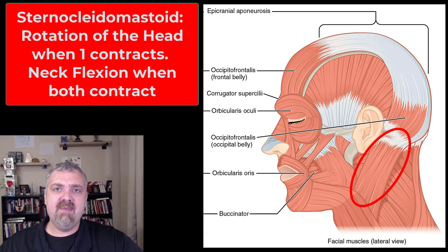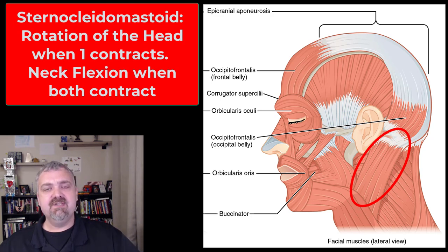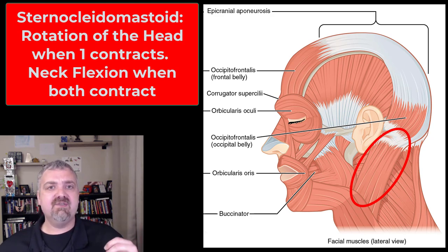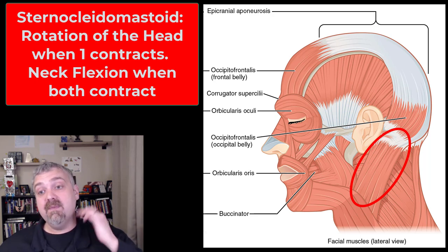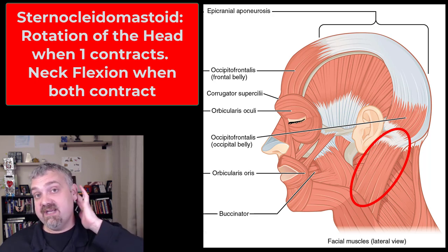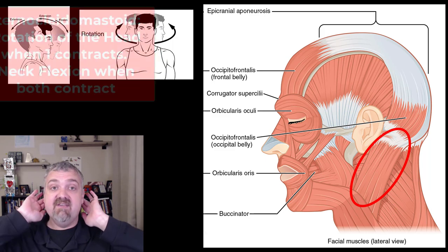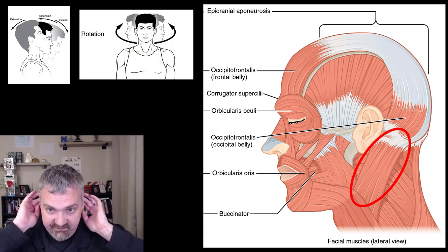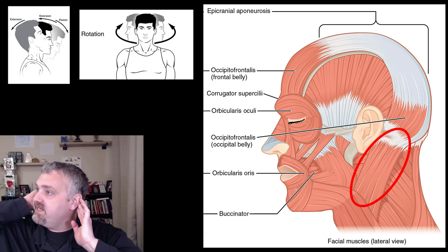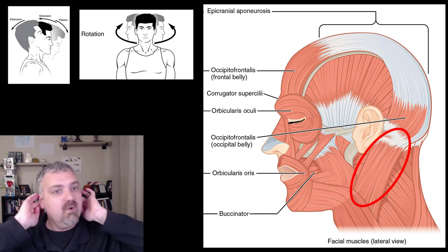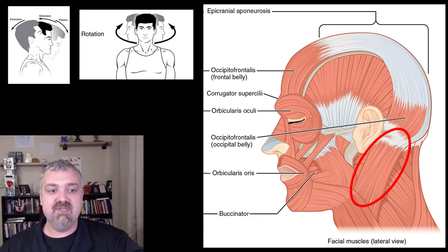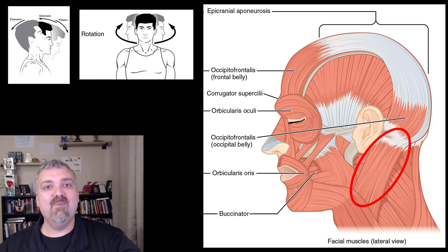Lastly, we have the sternocleidomastoid — you can see at least the insertion here. Sterno means it originates on the sternum, cleido means clavicle, and it inserts on the mastoid process. If both sides contract, it will flex the neck. If one side contracts, it will rotate the neck — that's why those motion images are shown. Those are all the key muscles of the head and neck. I hope this helps. Have a wonderful day — be blessed.